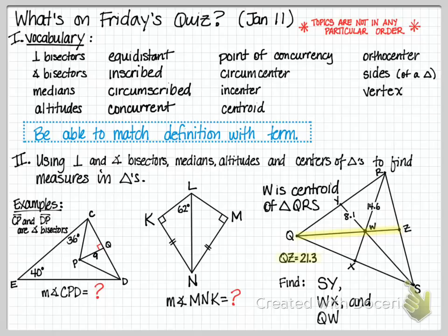We're given the measure of the segment YW is 8.1, and we didn't put the number in the diagram, but it's written, and I highlighted it in yellow, that the segment QZ is 21.3 units long. And you are to find the measure of the segment SY, the measure of the segment WX, and the measure of the segment QW.